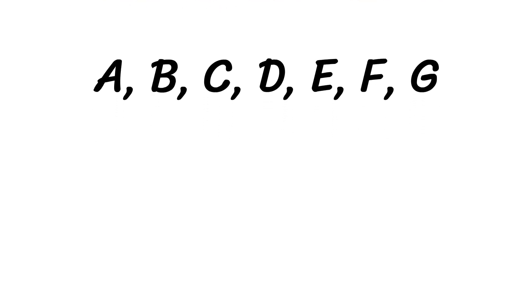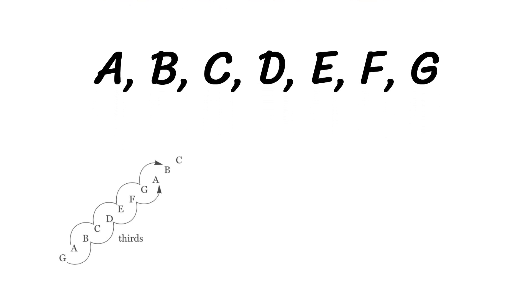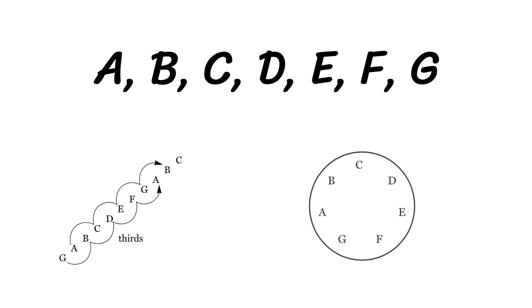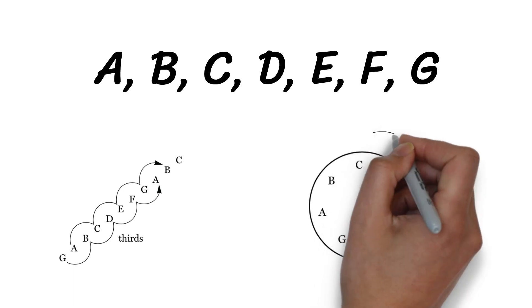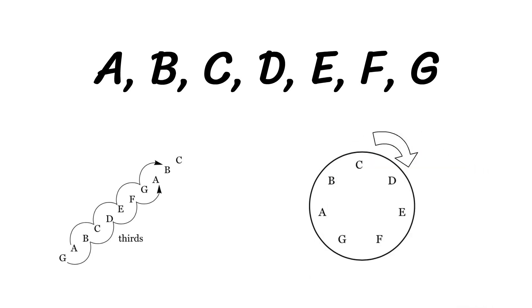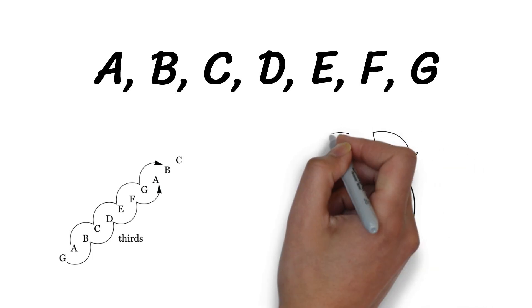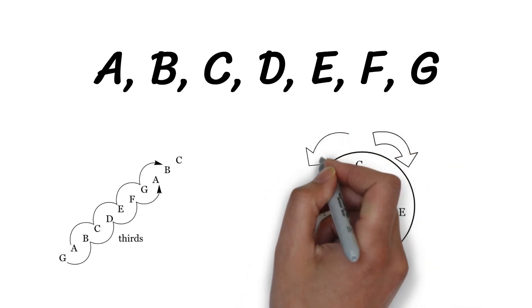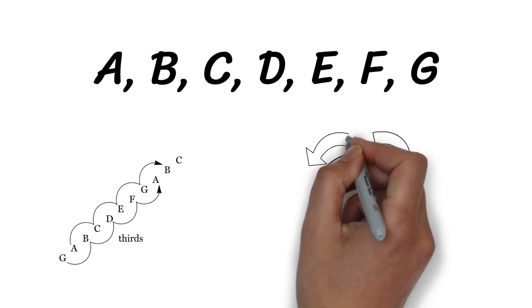Imagine these seven letters ascending like stairs or arranged around a circle like a clock, as in the figure. Count up or down in the series by reciting the letters forward (clockwise) or backward (counterclockwise).